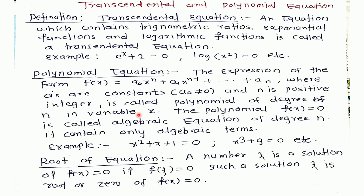The polynomial f(x) = 0 is called an algebraic equation of degree n. When we equate the polynomial to zero, we call this an algebraic equation of degree n. It contains only algebraic terms. Examples: x^2 + x + 1 = 0, x^3 + 9 = 0, etc.